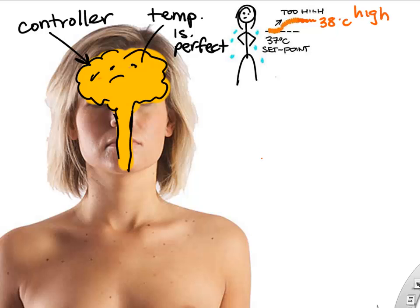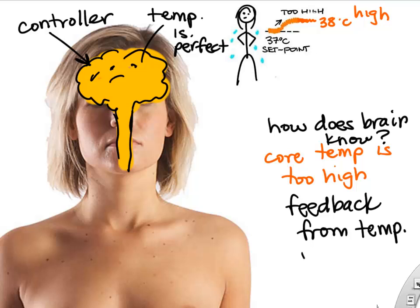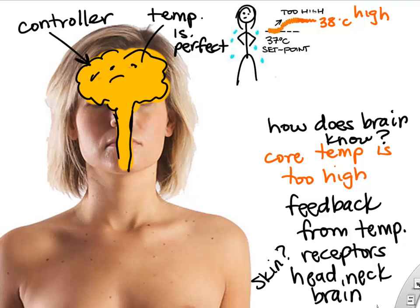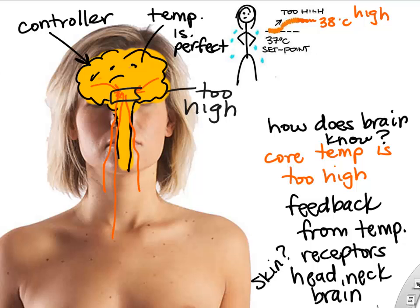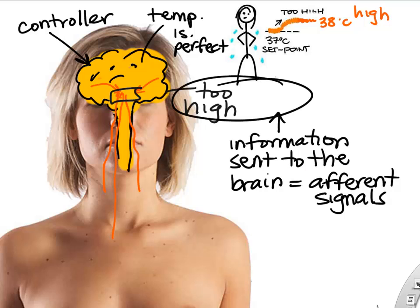Say your core temperature is too high because you're outside in Mesa, maybe even exercising. How does the brain know what your temperature is? We get feedback from temperature receptors — cells or neurons located in your head, brain, neck, face, or even skin — that send information back to the brain regions in charge of deciding whether your temperature is correct. This information telling your brain that temperature is too high is called an afferent signal.